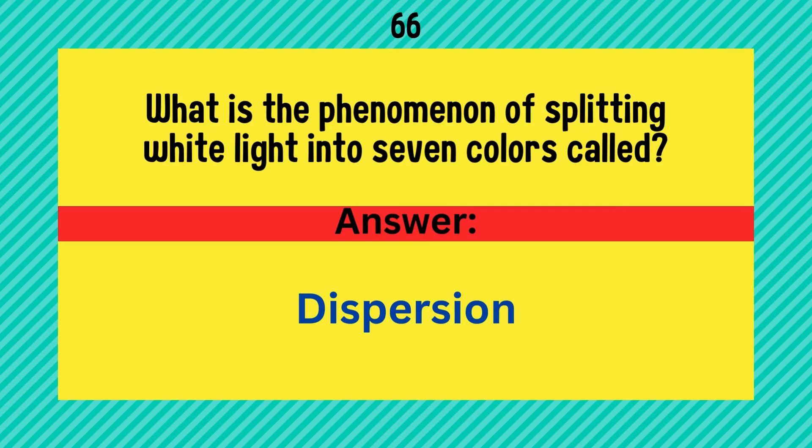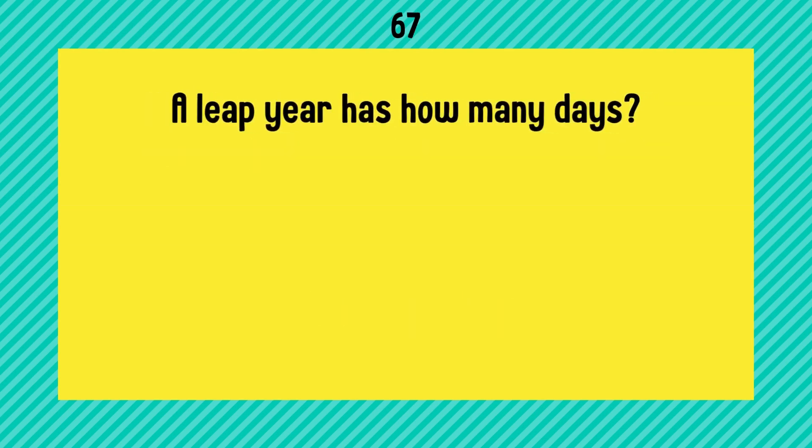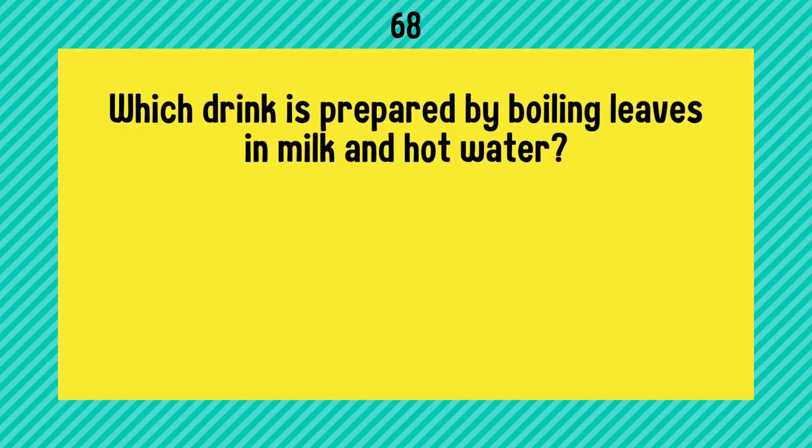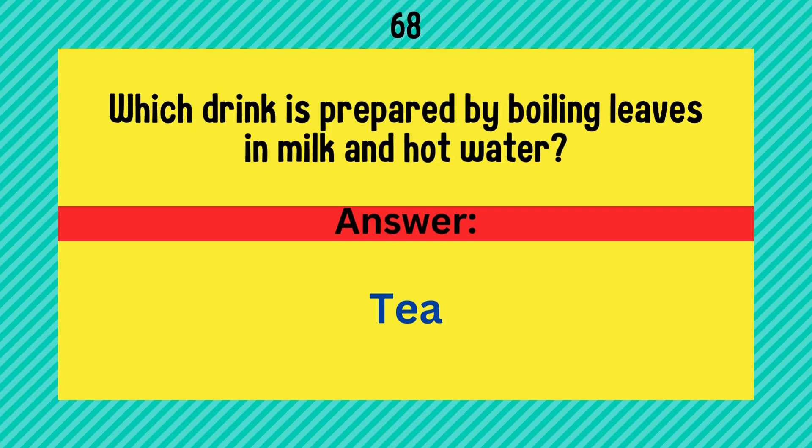A leap year has how many days? Answer is 366. Which drink is prepared by boiling leaves in milk and hot water? Answer is tea.